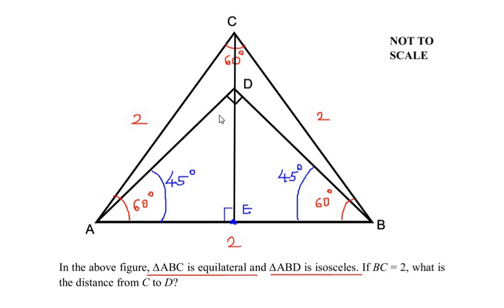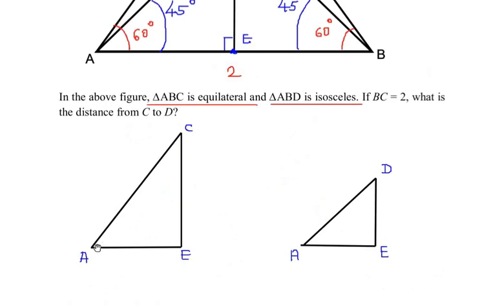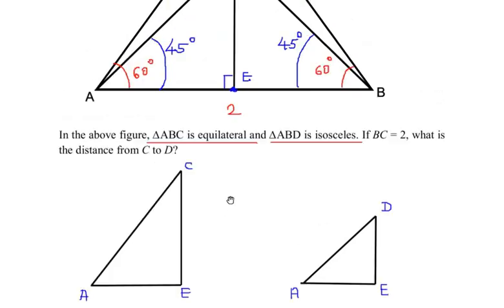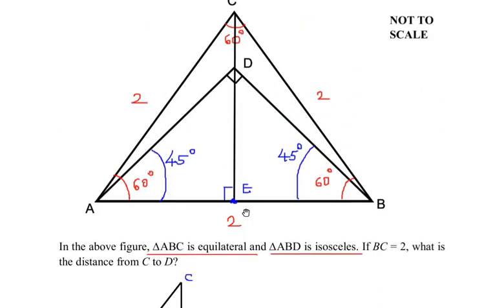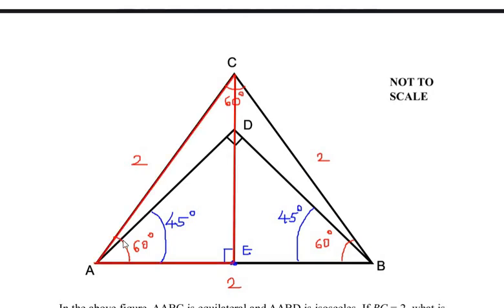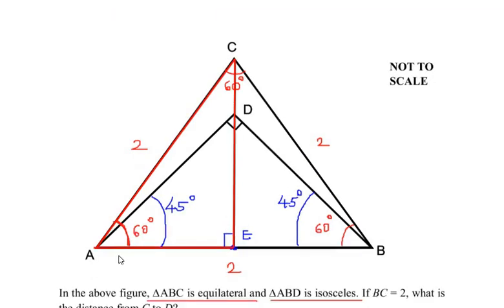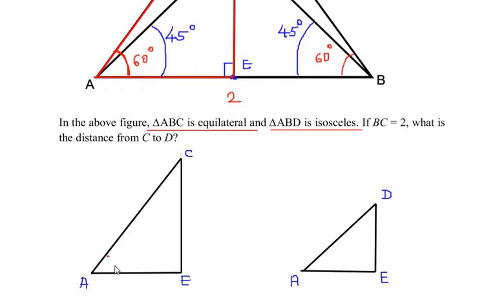Now I am going to take only this side of the triangles and draw them separately. Let us mark the angles starting with triangle ACE. Looking at angle A first from triangle ACE — we had seen that the total angle A was 60 degrees because it was an equilateral triangle. Angle E is 90 degrees. Using the angle sum property, angle C is going to be 30 degrees, so that all the angles add up to 180.